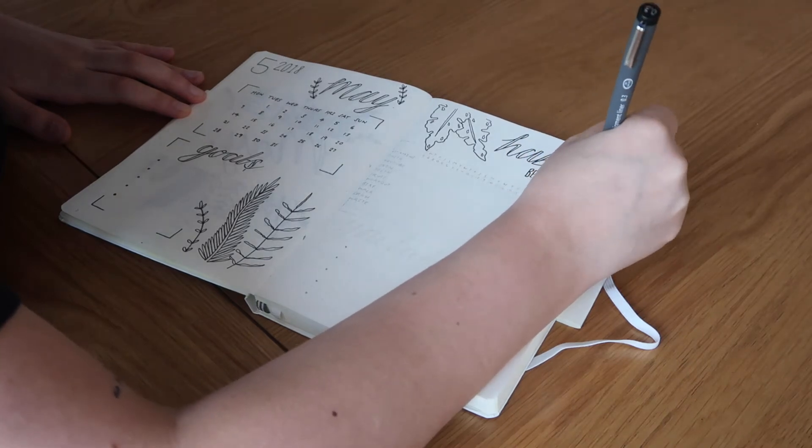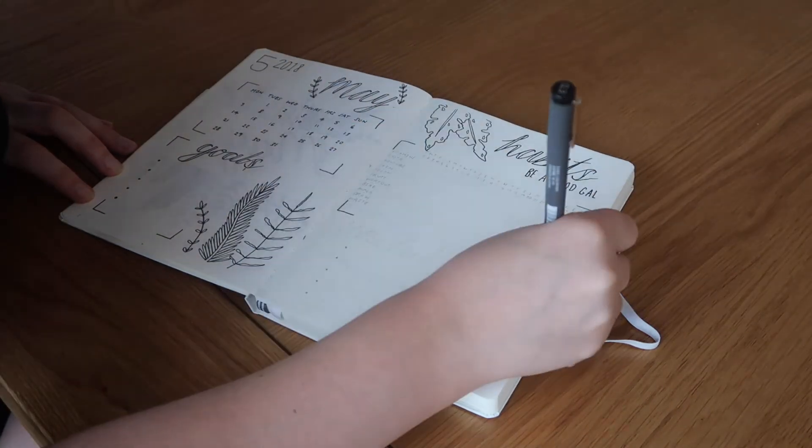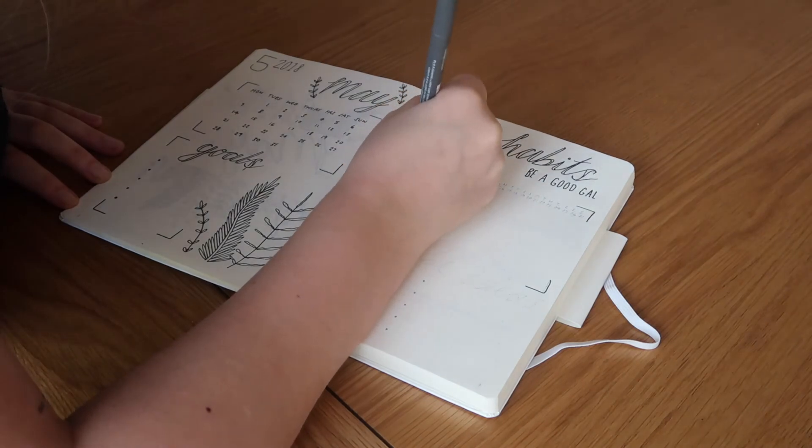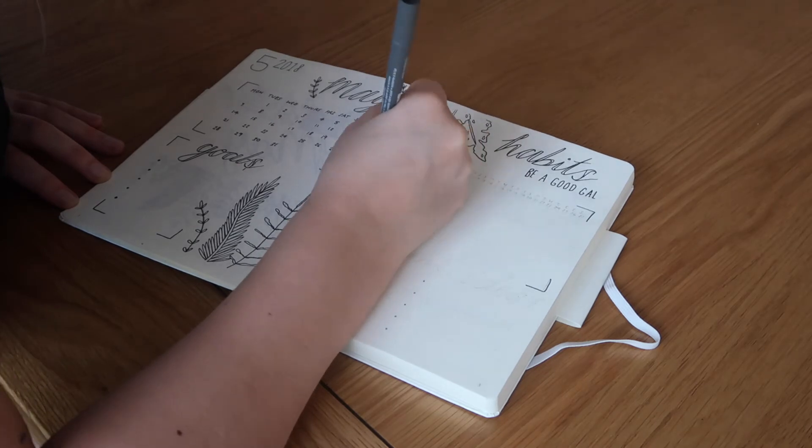And basically you write every day for each... you do the dates for each day. And underneath each one on each day you do a dot. So you put a dot if you've actually done it.